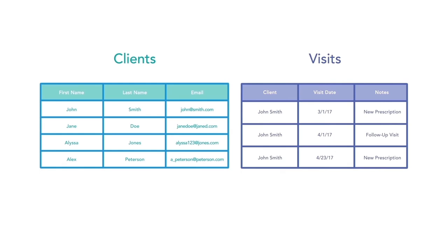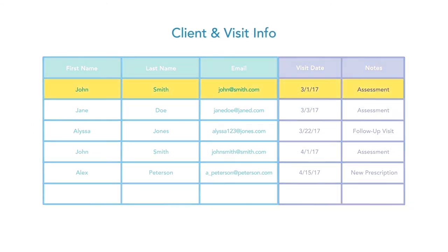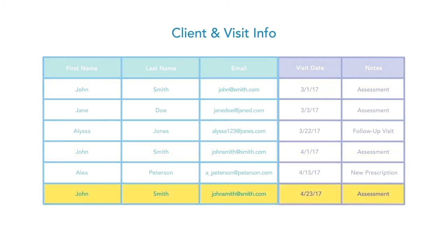Tracking information manually in one or two spreadsheets can be made much simpler using tables. In the case of your clinic, you have your client and visit information entered into one spreadsheet. Every time John Smith visits your clinic, you create a new row and have to re-enter his information like first name, last name, and email.